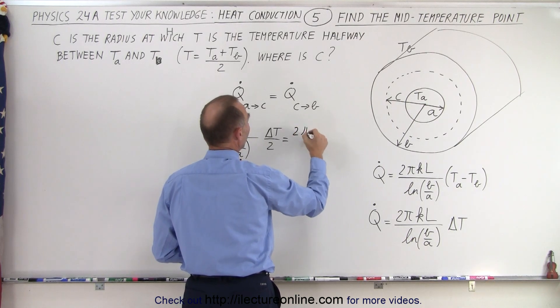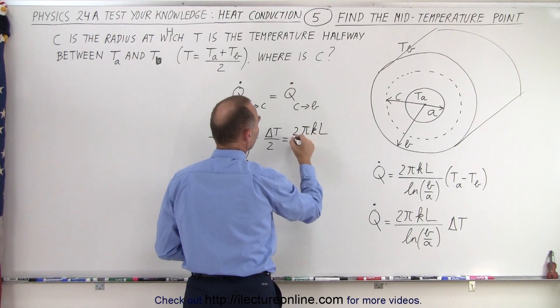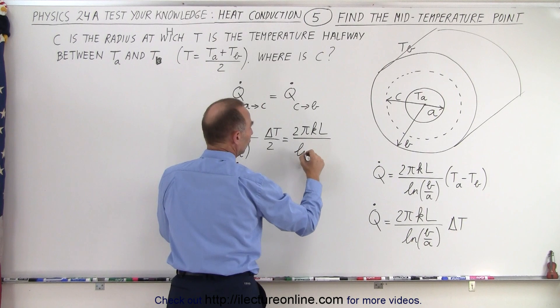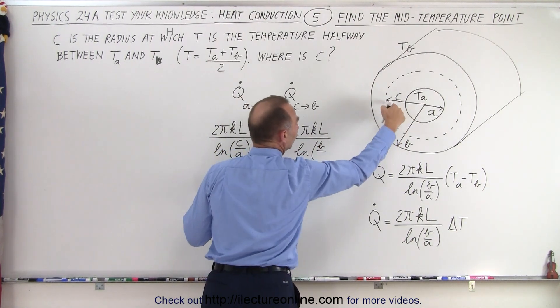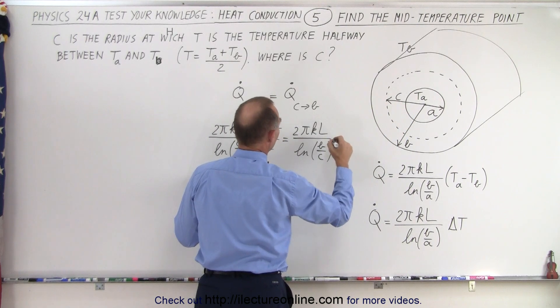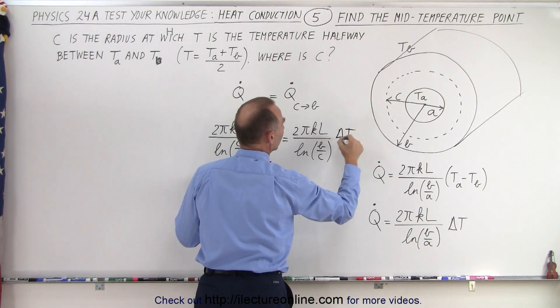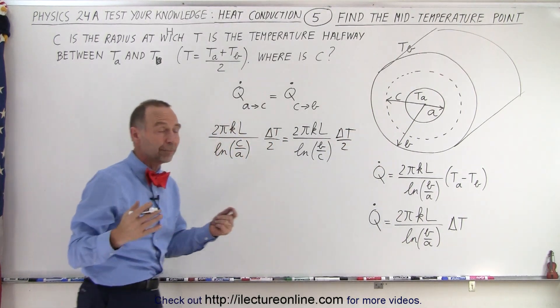Which also is 2πKL divided by the natural log of the outside radius B divided by the radius to C, and again times delta T divided by 2. So we know that that must be the same.